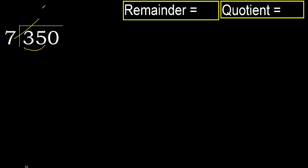7 multiplied by which number is nearest to 35 but not greater? 7 multiplied by 6 is 42, which is greater. Multiplied by 5 — 35 is not greater.